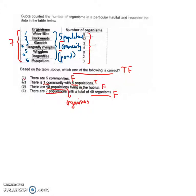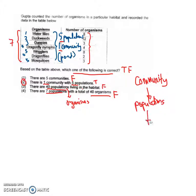The answer is option two: one community with five populations. Always remember: a community is made up of populations of organisms; populations of organisms are made up of individual organisms; and individual organisms include the different parts of the life cycle of that organism. So remember: populations make up a community, organisms make up a population, and the different parts of the life cycle make up the population of the organism.